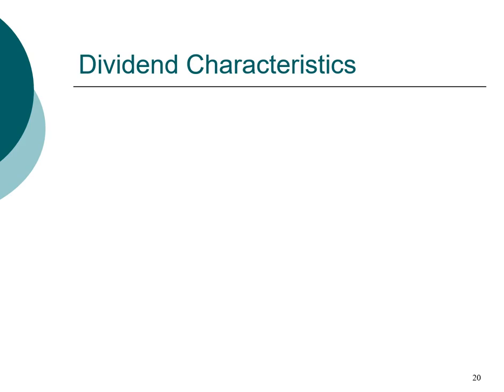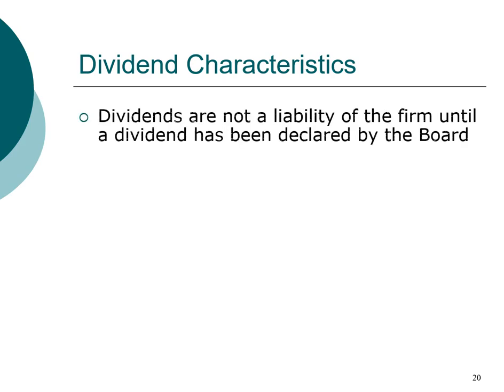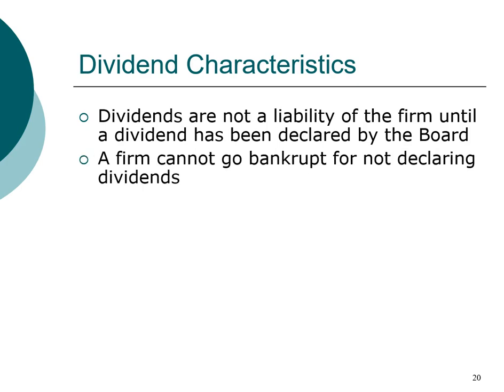Dividends are an important part of the cash flow that returns to shareholders, so it's worth understanding their key characteristics. A very important feature of dividends is that they are not a liability. A company can go for a long time without paying dividends — Apple is one example, as it took many years before Apple started paying dividends. However, once a dividend is declared by the board of directors, it becomes a liability and the firm is obliged to pay it. Shareholders cannot force a firm to pay dividends, and a firm cannot be forced into bankruptcy simply by not paying dividends.